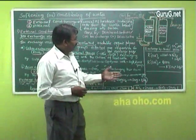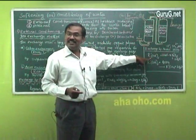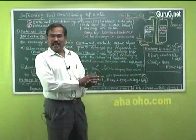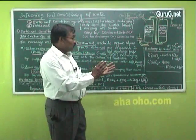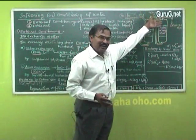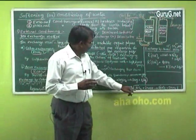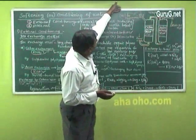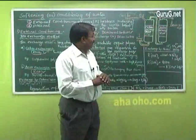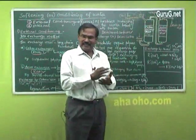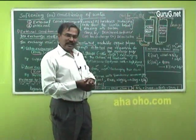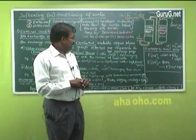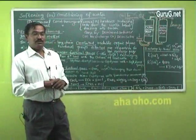For the anionic exchange resin, which becomes loaded with Cl- and other anions, regeneration is done by passing sodium hydroxide. Care must be taken not to pass hydrochloric acid through the anionic resin — it must be disconnected from the cationic resin during regeneration. Pass HCl through the cation resin separately, and NaOH through the anion resin separately, so both resins are regenerated and ready for use again.